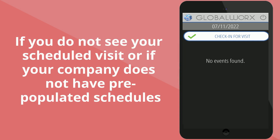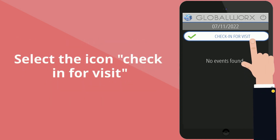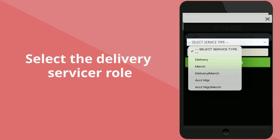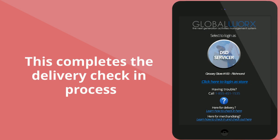If you do not see your scheduled visit, or if your company does not have pre-populated schedules, select the icon check-in for visit, select the delivery servicer role, and select check-in. This completes the delivery check-in process.